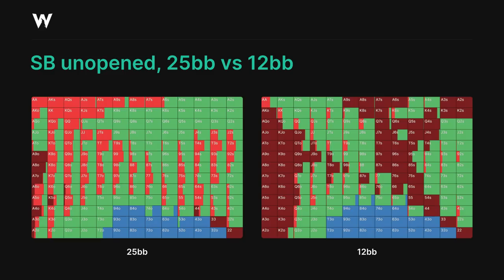Our all-in shoving range on the other hand is now somewhat condensed. We're jamming a lot of hands which have good equity when called, but aren't strong enough to trap or weak enough to fold. We're prioritising a lot of the suited 7x hands and offsuit kings as the cutoff point for our jamming range, because the strongest suited hands are now limping to trap, and they have so much equity to realize in limped pots that they play very well when it goes limp-check.